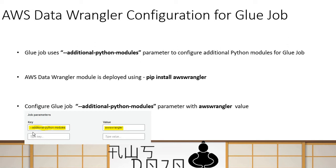In the Glue job parameters, you provide this specific reserved parameter and the module name — AWS Wrangler in this case — and your module will be made available to the Glue job. You can also specify a particular version of the Wrangler, for instance 2.2, 2.3, or 2.4, by providing the version number alongside the module value. Otherwise it always defaults to the latest version.